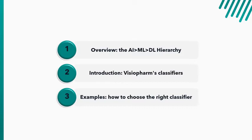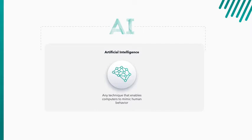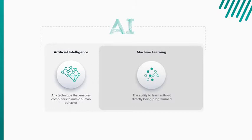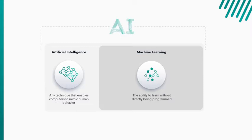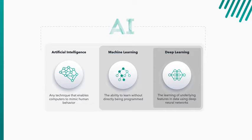So artificial intelligence is kind of the umbrella term. It's classified as any technique that enables computers to mimic general human behavior. Machine learning is a category of artificial intelligence and is the ability to learn without directly being programmed. So machine learning is a subcategory of artificial intelligence and is an example of an intelligent classifier. It is something that can learn to distinguish things on its own. And then a form of machine learning is deep learning. This is the learning of underlying features in data using deep neural networks, which we'll cover in a minute. So it's really a hierarchy of terminology. Deep learning fits within machine learning and machine learning fits within artificial intelligence.